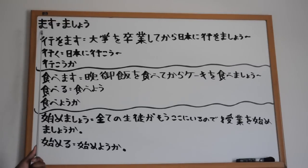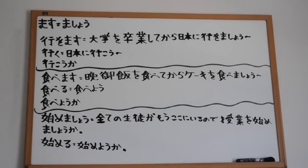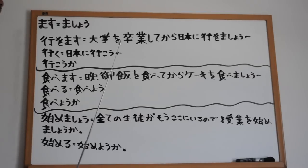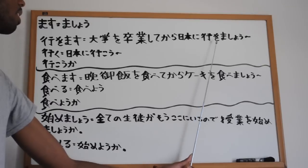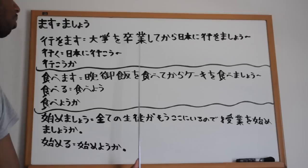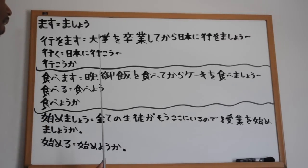You're just going to take the masu, drop off the su, and add shou - like that. That's all you need to do. That simple. So for example, I have ikimasu. Ikimasu means you're going to go, or you go in general. So: daigaku wo sotsugyo shite kara nihon ni ikimashou - after I graduate from college, let's go to Japan.